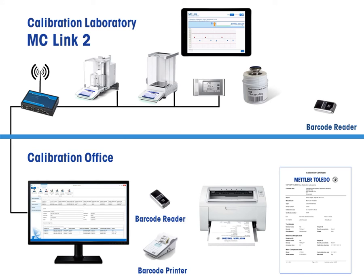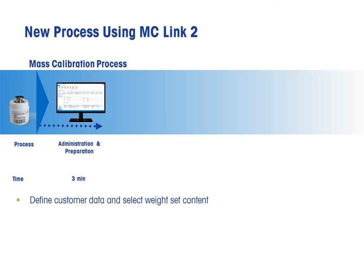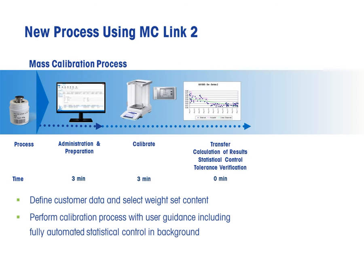With the barcode option, the data security is improved even more, reducing human error to a minimum and increasing efficiency at the same time. The process using MCLink 2 is reduced to customer data administration, which is performed within three minutes, including the definition of the weight set. Once the calibration has begun, there is no need for the user to touch the tablet or laptop, allowing them to concentrate fully on the important weight handling process, hence improving the overall performance.